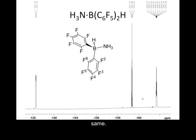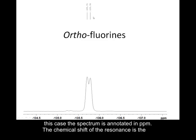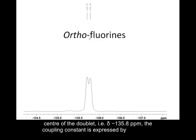We see three signals in this fluorine NMR, but we need to zoom in on each of those signals to see what is going on. If we zoom in on the ortho-fluorine resonance, it appears as a doublet, because it's split by the adjacent meta-fluorine. The spectrum is annotated at the top with the peaks picked out in ppm. The middle of this doublet comes at minus 135.8 ppm, which is the chemical shift of the doublet itself.